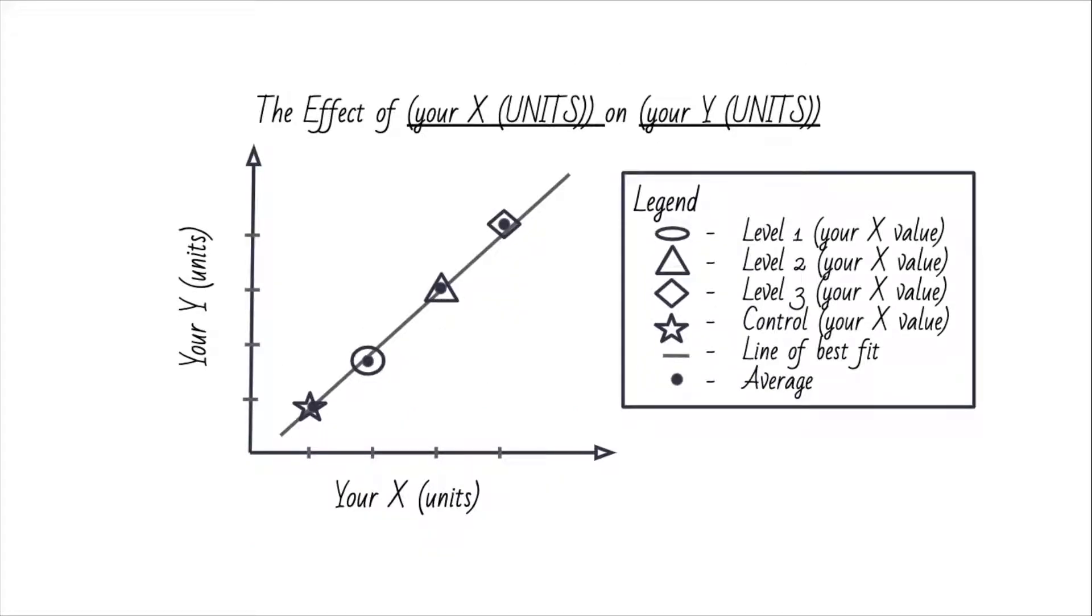So here's a little template of your graph. Also always, always, always remember the title: the effect of blah on blah. And then they usually give you the little grid. From past cases, we usually only plot the average of each level. So average of control is one dot, and then average of level one, average of level two, average of level three. And then you are going to create a legend. Use different weird shapes, whatever you come up with to denote different levels. We usually just use a dot for average, and then weird circles, triangles, whatever to show level one, level two, and level three. And then you draw a line crossing at best all the points for your line of best fit.